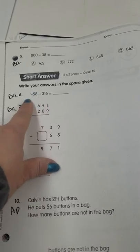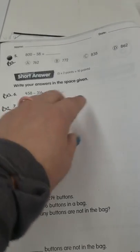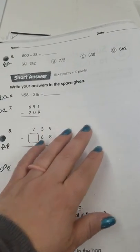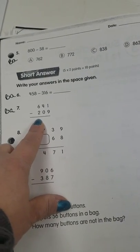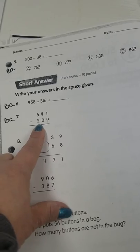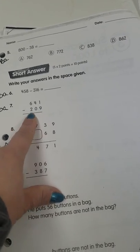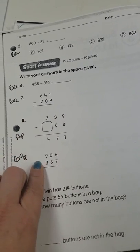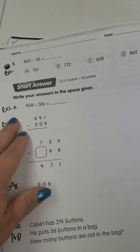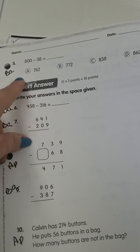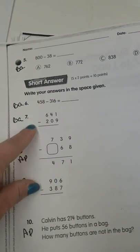Some more subtraction problems. They wrote it in hot dog style. You need to make sure you put it in hamburger style and lock your number up. Number 7, 641 minus 209. Make sure again you're locking those numbers up and looking to regroup. Don't forget about our tricks. More on the floor, go next door, get 10 more.